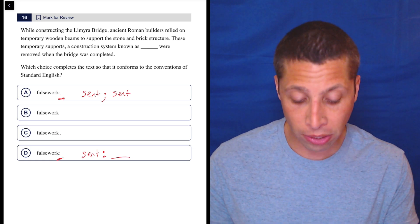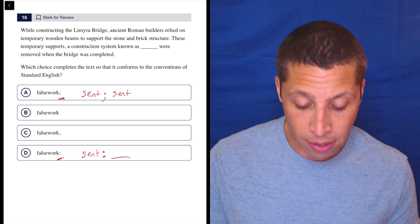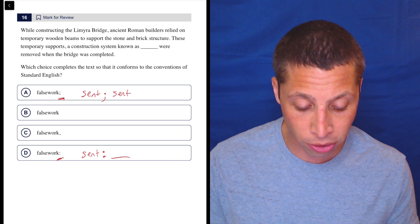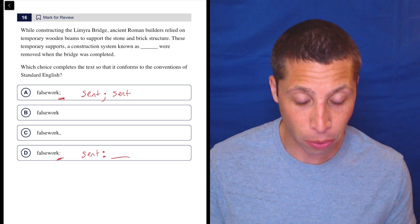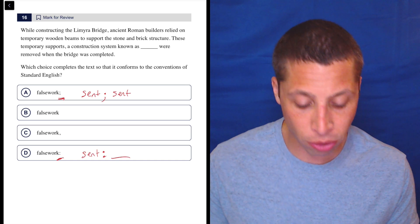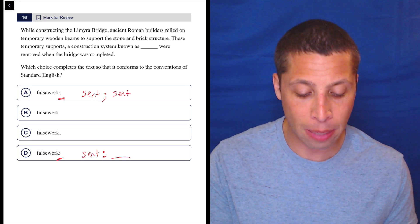Do we have a sentence beforehand? Because that might determine these two first choices right away. These temporary supports, a construction system known as false work. Well, what about the supports? We stopped talking. These temporary supports, a construction system known as false work, were removed when the bridge was completed.